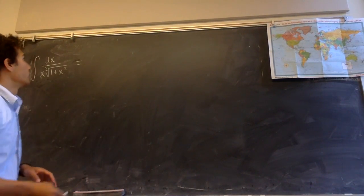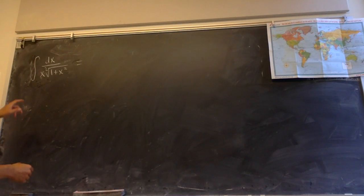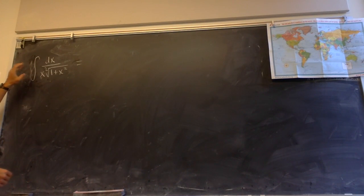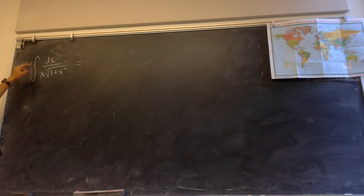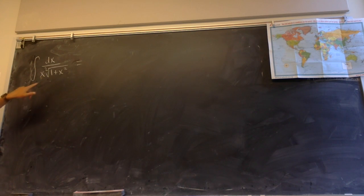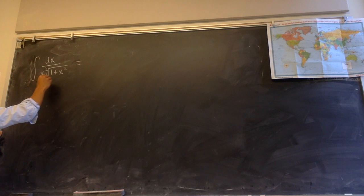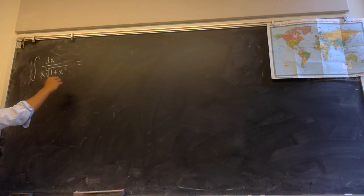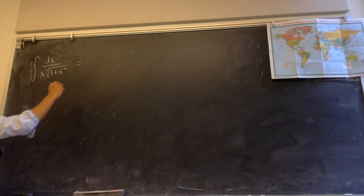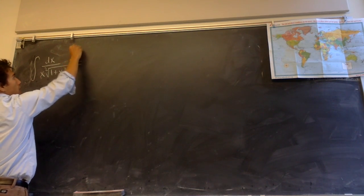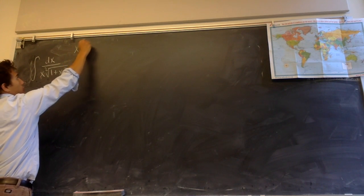In this video we're going to do a trig substitution. The question is: find the antiderivative of 1 over x squared times square root of 1 plus x squared. When you see this square root of 1 plus x squared, you should think to make the substitution x equals tangent theta.